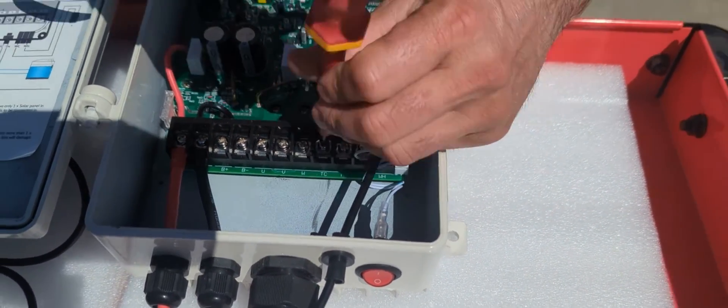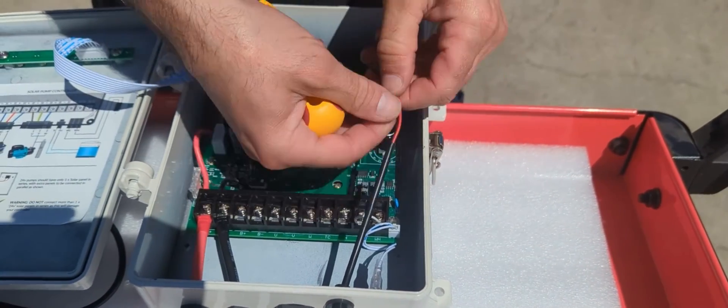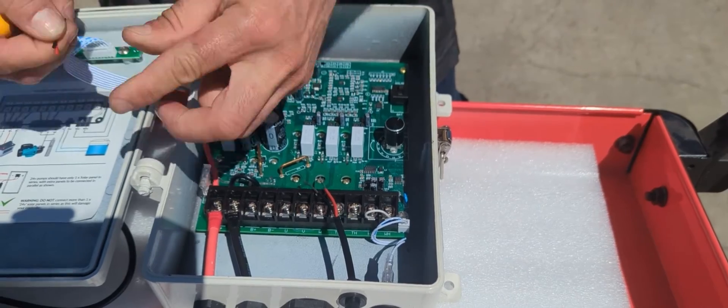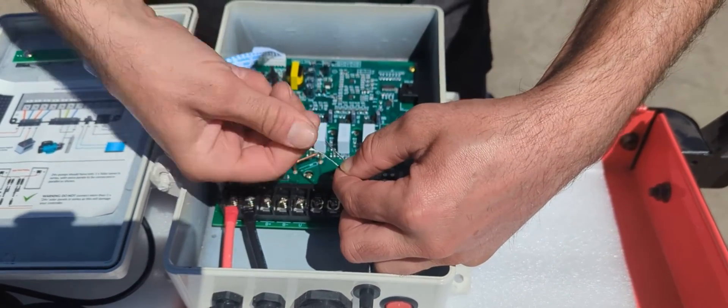So again, loosen off your screws, not enough to make them fall out. I like to twist the ends of the wire together to make sure they don't separate.